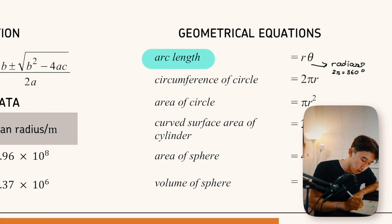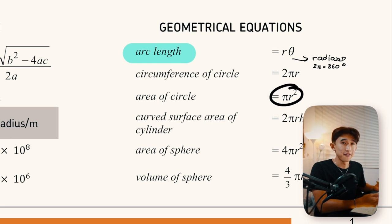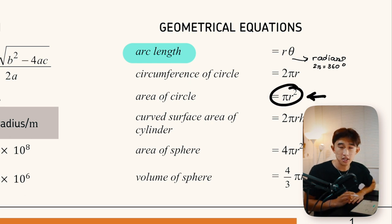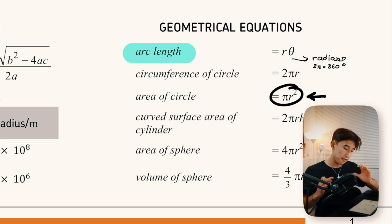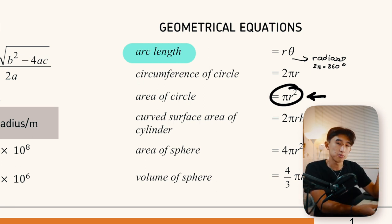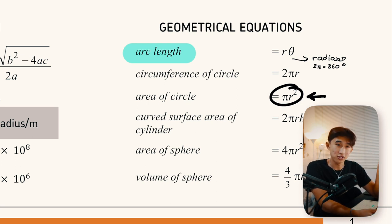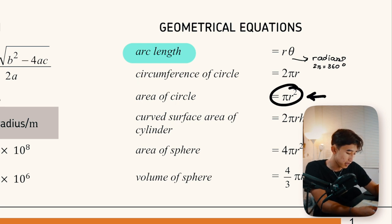The area of a circle is used quite a lot — for example in the resistivity equation and for pressure calculations. Curved surface area of a cylinder is less commonly used. Area of a sphere is the total surface area, sometimes used for questions modelling radioactivity and the inverse square law. Volume of a sphere is constantly used in the gravitational fields chapter, where we model all planets as perfect spheres.